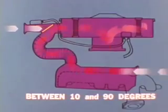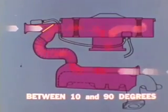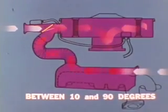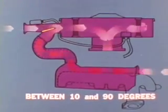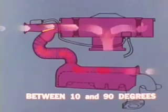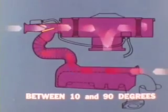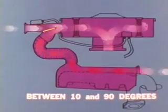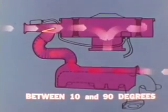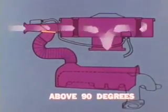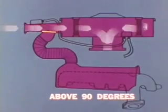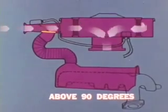Between 10 and 90 degrees, diaphragm action allows proportional flow through both air circuits to modulate inlet air temperature. Above 90 degrees, all inlet air flows through the snorkel entrance.